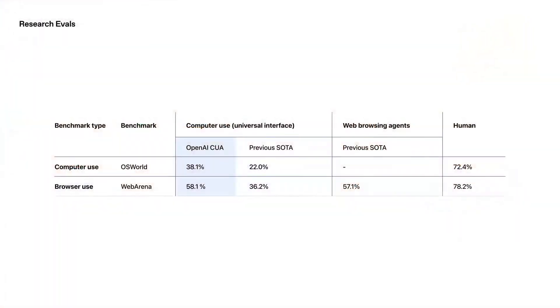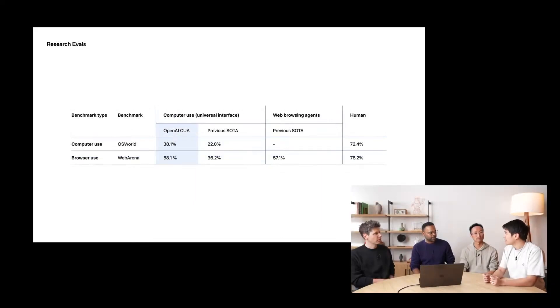Operator is a research preview and will make mistakes. Looking at benchmarks: on OSworld, which measures how well AI agents navigate common operating systems like Linux, it scores 38.1% — higher than other publicly published results, but below human performance of 72.4%. On WebArena, which measures navigation of common websites like e-commerce and social forums, it scores 58.1% — again higher than published results, but still falling short of human performance.